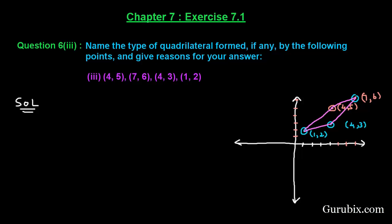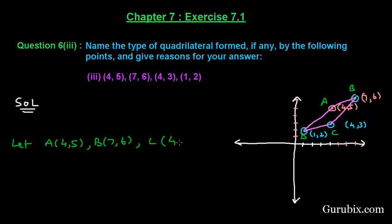Let us denote these points: suppose this is point A, this is point B, this is point C, and this is point D. So we shall write: let A(4,5), B(7,6), C(4,3), and D(1,2) be the given points.